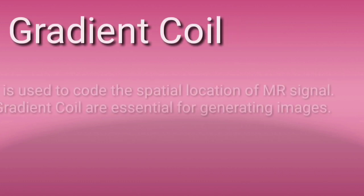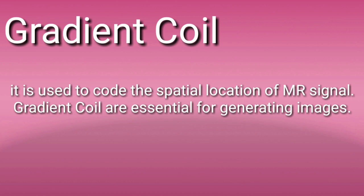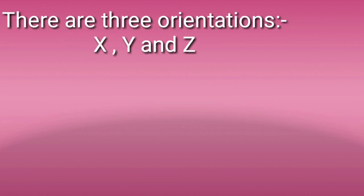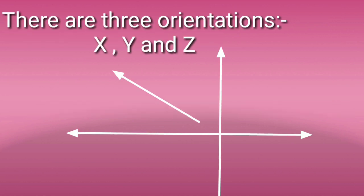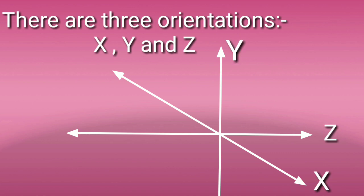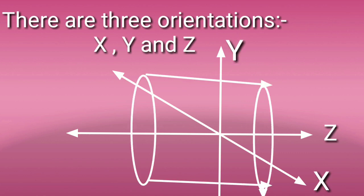Gradient coil is the coil of the MRI system. It is used for spatial location of MRI signals and is essential for generating images. There are three orientations used in the gradient: X, Y, and Z. Here you can see the diagram showing a patient lying along the Z axis.